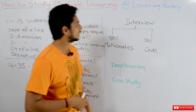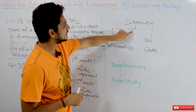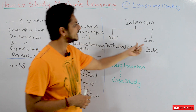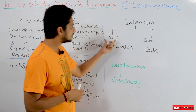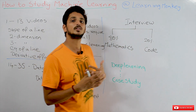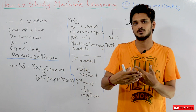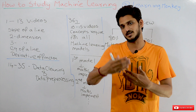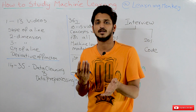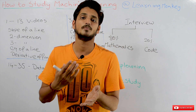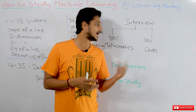Coming to the interview point, interviewers concentrate 20% of questions on the coding section and 80% of the questions on mathematics — how you understand the mathematics required for machine learning. Most of the questions are based on mathematics, so we concentrate much on mathematics here.